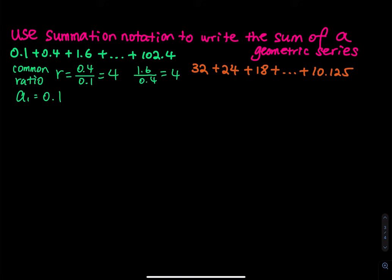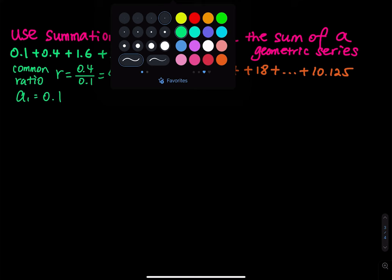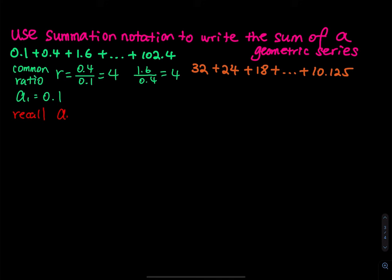From 0.1 to 102.4 — how many numbers are there? I used dot dot dot to skip all of them. You need to find out how many numbers are in this expression because in order to find the sum you need to know how many numbers there are. So first of all, I am going to recall the nth term formula.